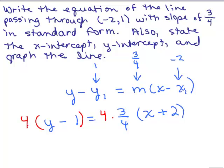On the left-hand side, you're going to have to multiply the whole side: y minus 1 times 4, and that gives me 4y minus 4. On the right side, when I multiply, the 4 is going to cancel with the denominator of 4 — it will already cancel — so I really have 3 times x plus 2.